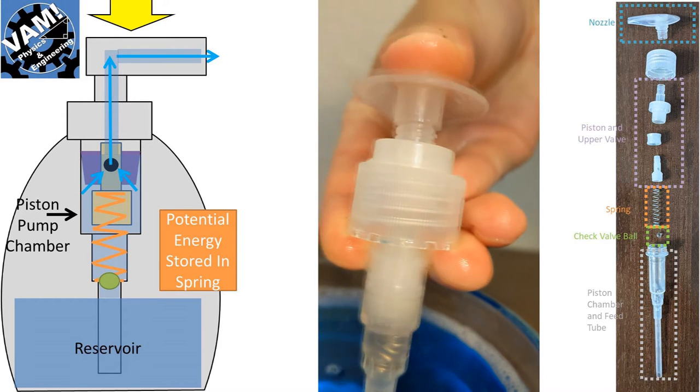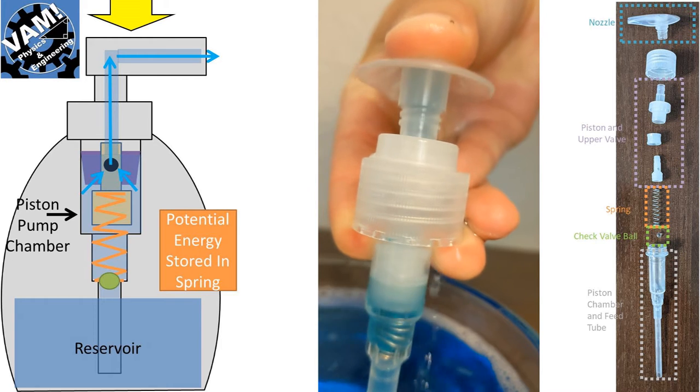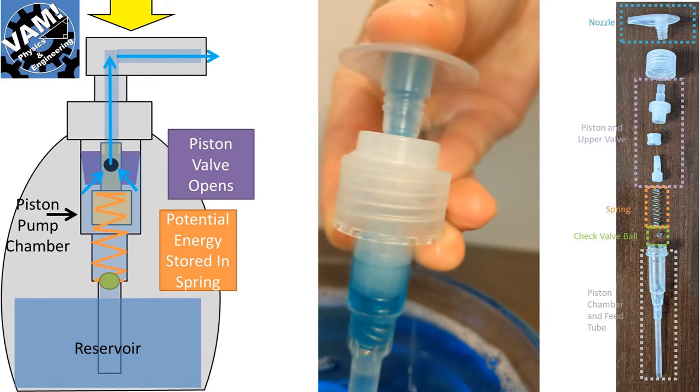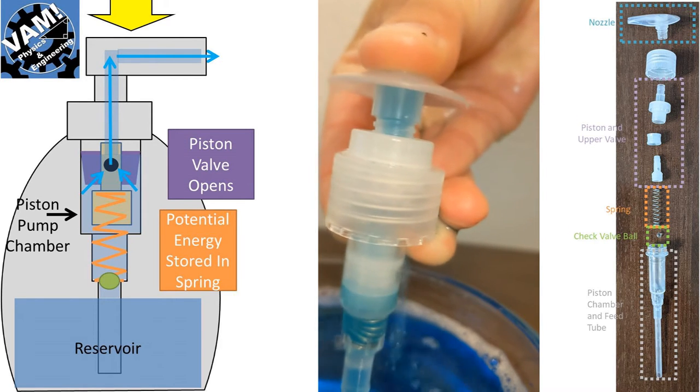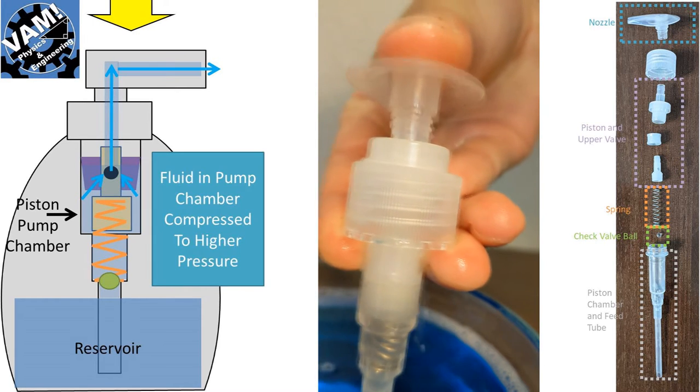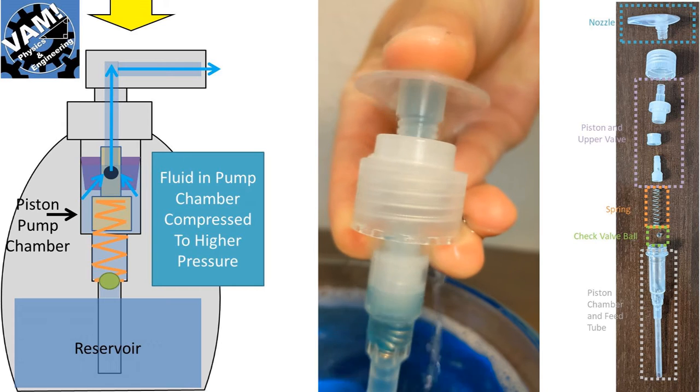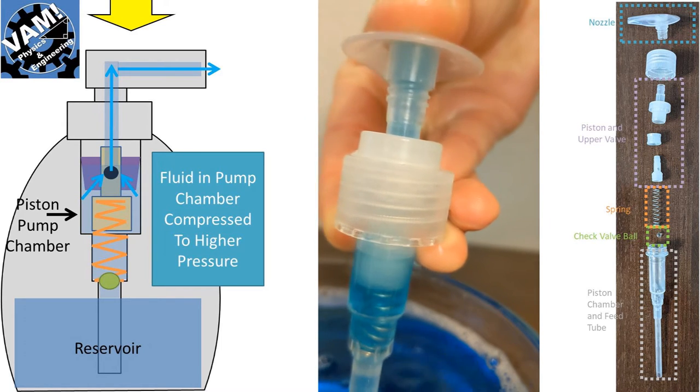This force causes the spring to compress and turn the kinetic energy from pushing down into stored spring potential energy. At the same time the upper section of the pump piston marked with a purple trapezoid gets forced to open due to the friction on the sides of the pump chamber. This allows the fluid to flow through the center and through a hole that is within the assembly and through the nozzle of the soap dispenser.